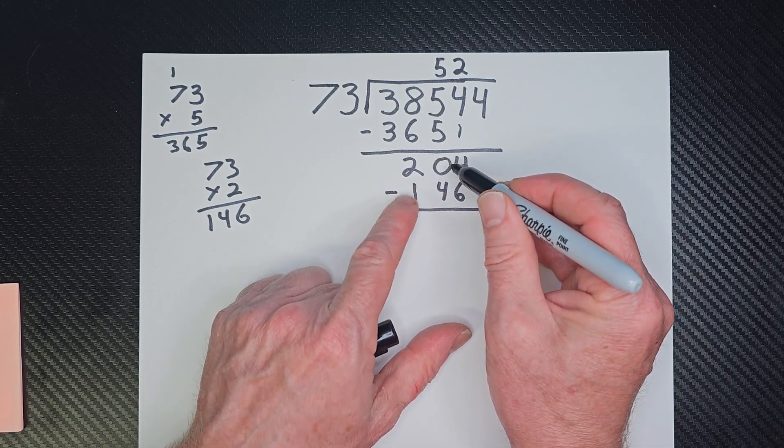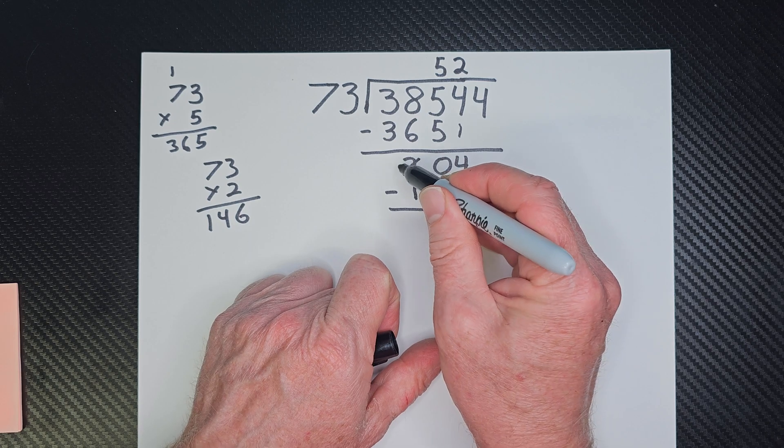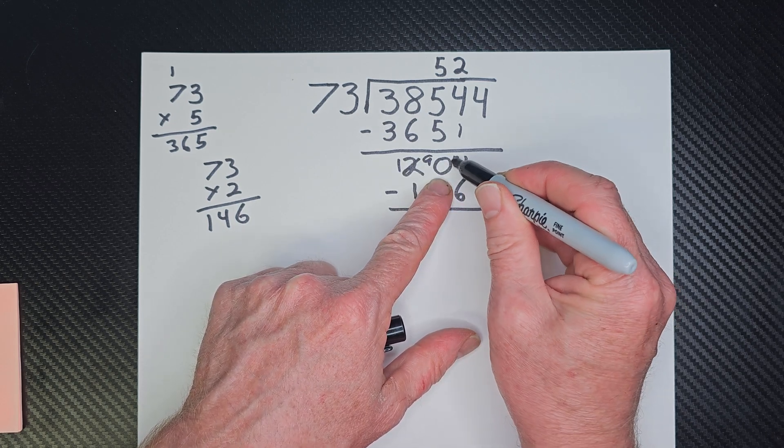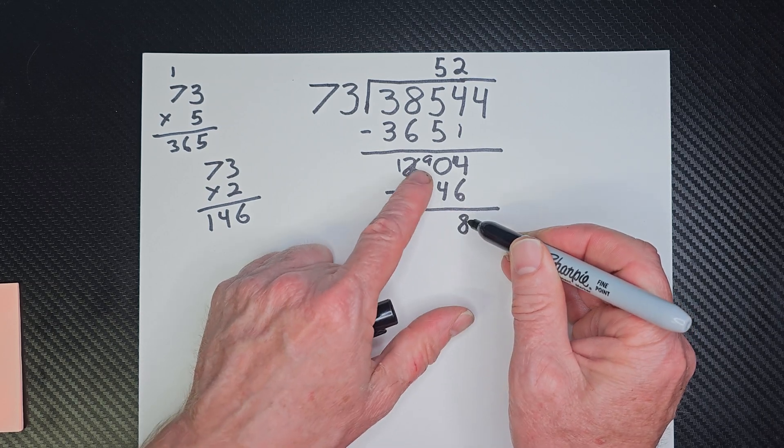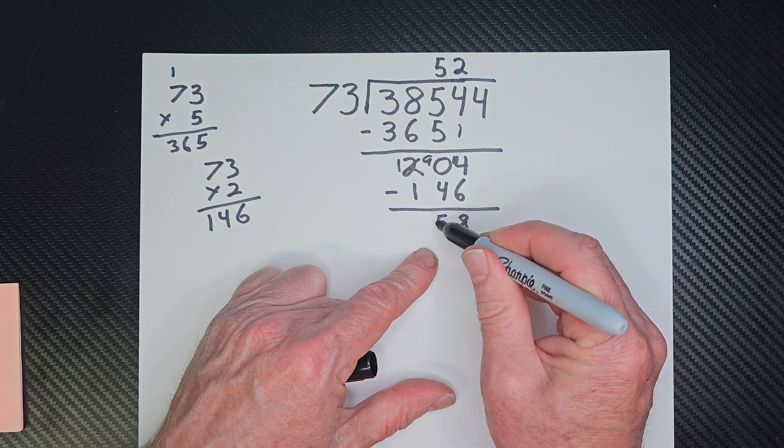And I need to borrow all the way from over here. So that'll be this. And this 0 will turn to a 9. And this will be a 14. And 14 minus 6 would be 8. And 9 minus 4 would be 5.